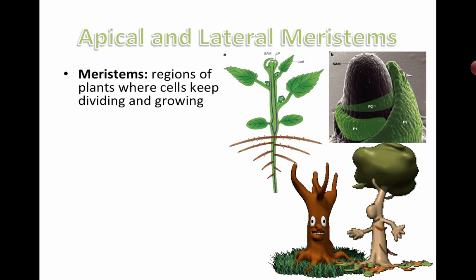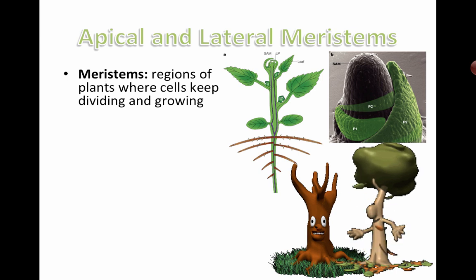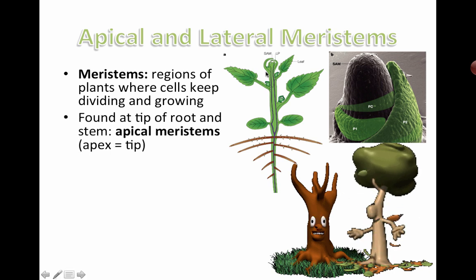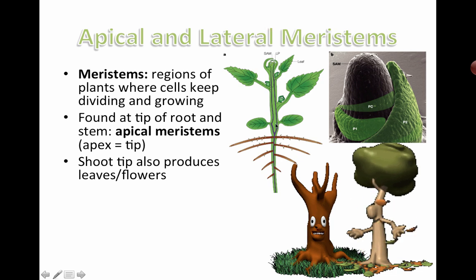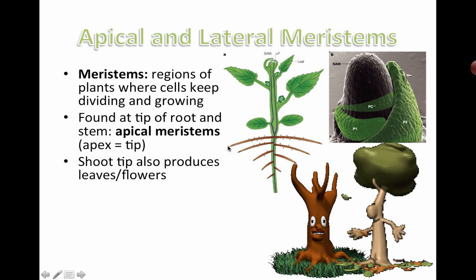Meristematic tissue was mentioned in a previous video. When you think meristems, think of them as stem cells — meristems are a specific type of stem cell that can increase the size of a plant. At the tip of the shoot and at the tip of the roots are apical meristems. 'Apical' comes from the word apex, meaning tip. That's how the shoot continues to grow upward and produces leaves and flowers. Cells constantly divide here, contributing to growth, and the same is true for the roots.